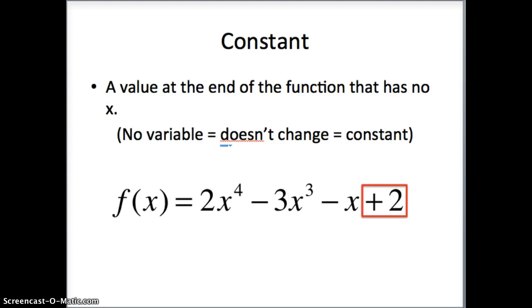And then the last thing, constant. At the end, the constant is a value at the end of the function that has no x. And what we really mean by constant means it doesn't change. And if it doesn't change, that means there's no variable because variable means, by definition, variable means change. So really, it's just that thing that doesn't have an x that's off at the end. And once again, it's just going to help us solve for x later on.